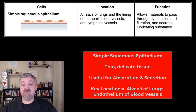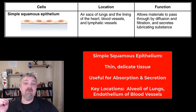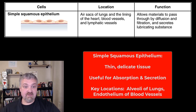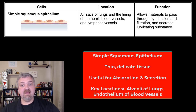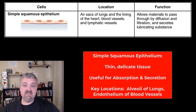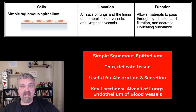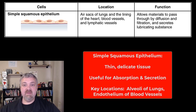Remember squamous cells are going to be flattened, kind of look like fried eggs, circular cells. So a simple squamous epithelium is going to be a single layer of these thin cells. This is the thinnest, most delicate tissue type in the body. Remember, simple means absorption and secretion, so there's not going to be any protection here, but it's designed to move material very quickly because it's only that one layer thick, which means that diffusion will occur very easily.